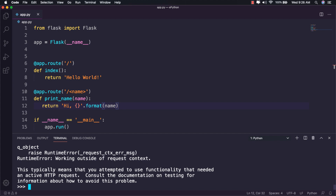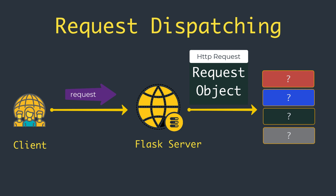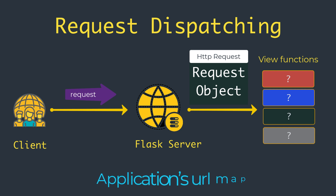Let's move to request dispatching. When the application receives a request from a client, it needs to find out what view function to invoke to service this request. For this task, Flask looks up the URL given in the request in the application's URL map, which contains a mapping of URLs to the view functions that handle them. Flask builds this map using the data provided in the app.route decorator.